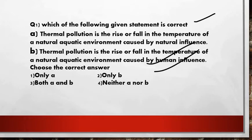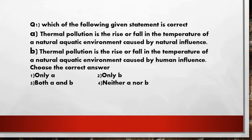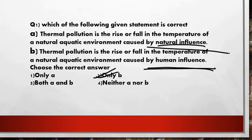Choose the correct answer: only A, only B, both A and B, or neither. The answer is only B — caused by human influence, not natural influence. Natural influence will balance itself automatically, but when human interference occurs, the natural balance also gets affected. So option A is wrong and option B is the correct answer.